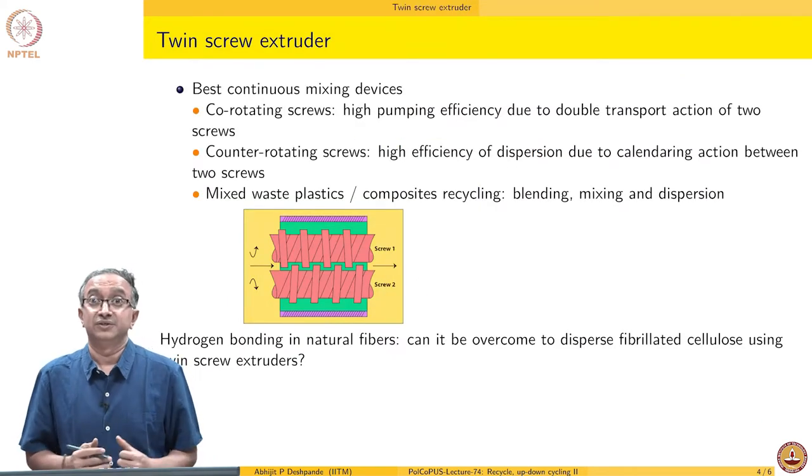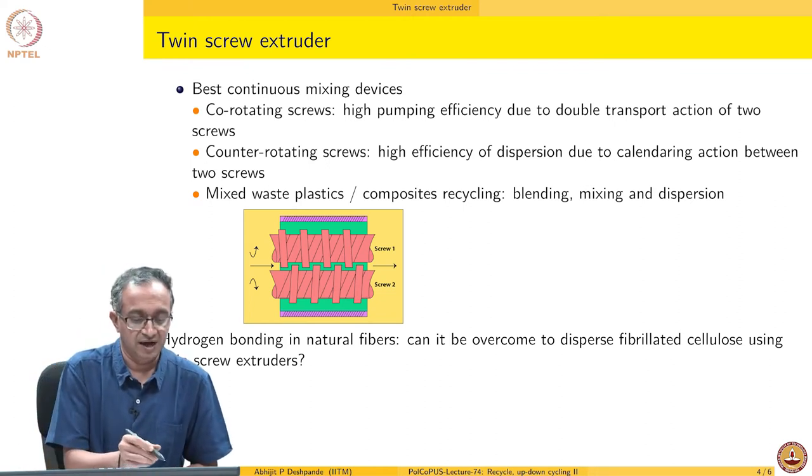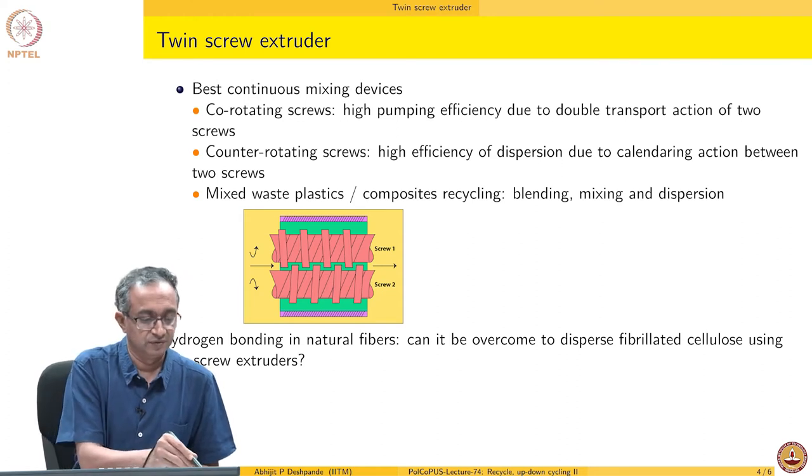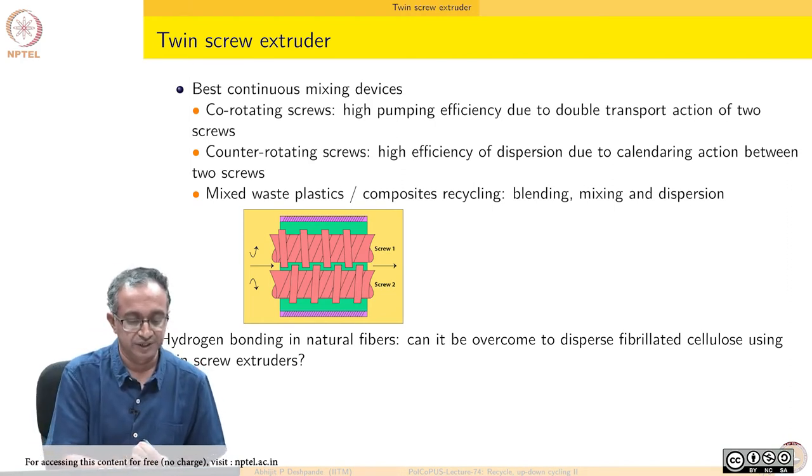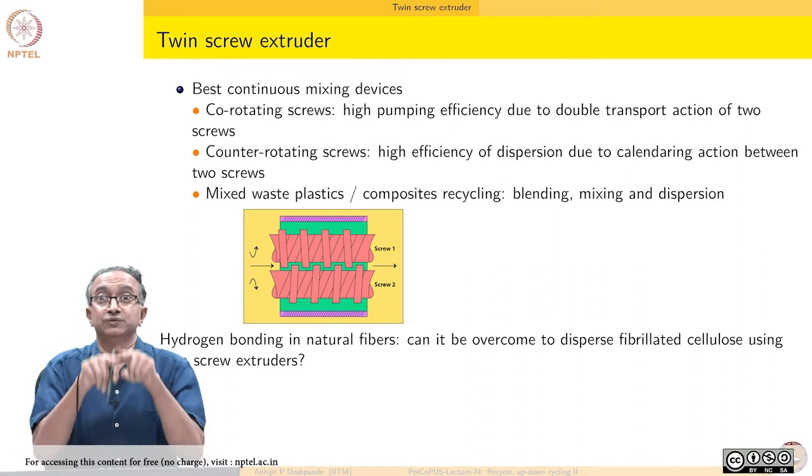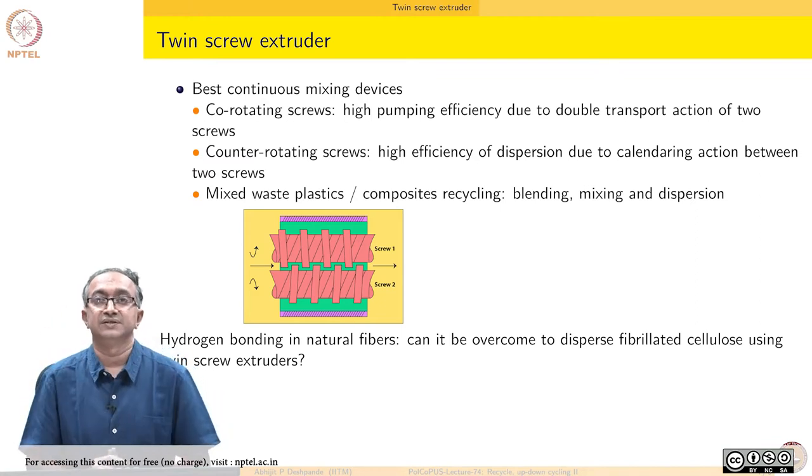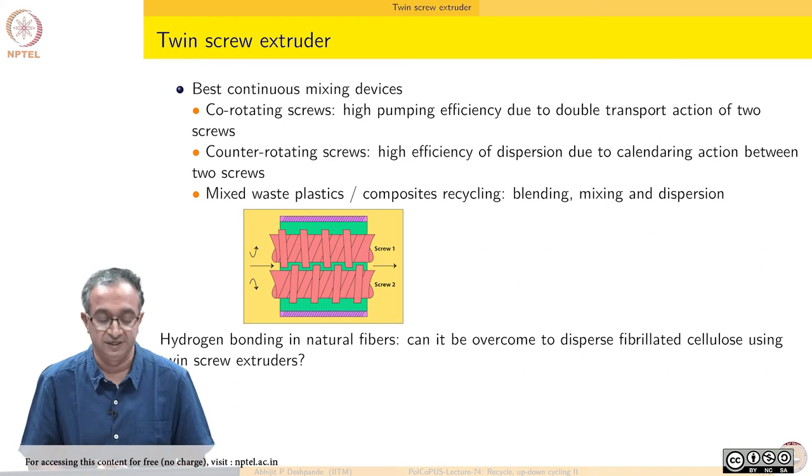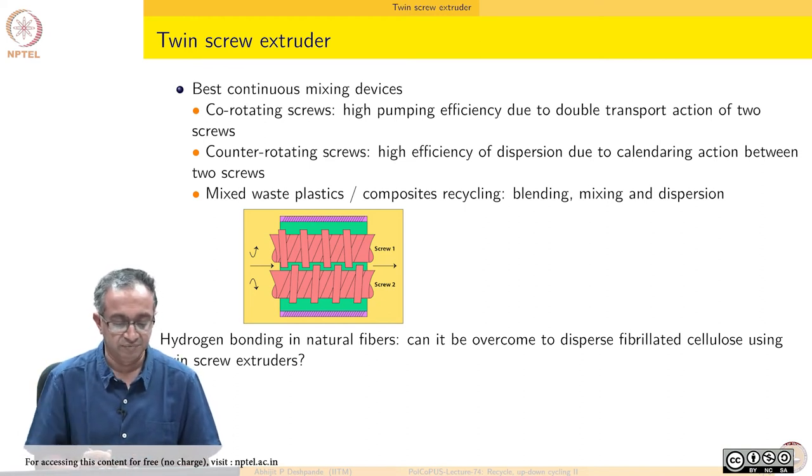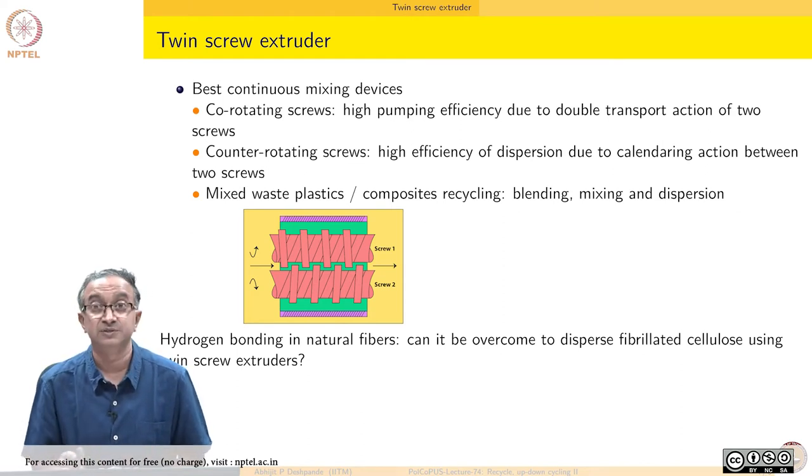We can look at use of twin extruder as a possibility in the recycling operations. This is one of the best devices in terms of mixing. It comes in co-rotating as well as counter-rotating versions. You can have screws which are counter-rotating or both of them are rotating in the same direction. This way you can achieve pumping efficiency in one case or very high efficiency of dispersion in other case. And given that we are looking at mixed waste plastic composites recycling, blending mixing and dispersion are a key requirement.